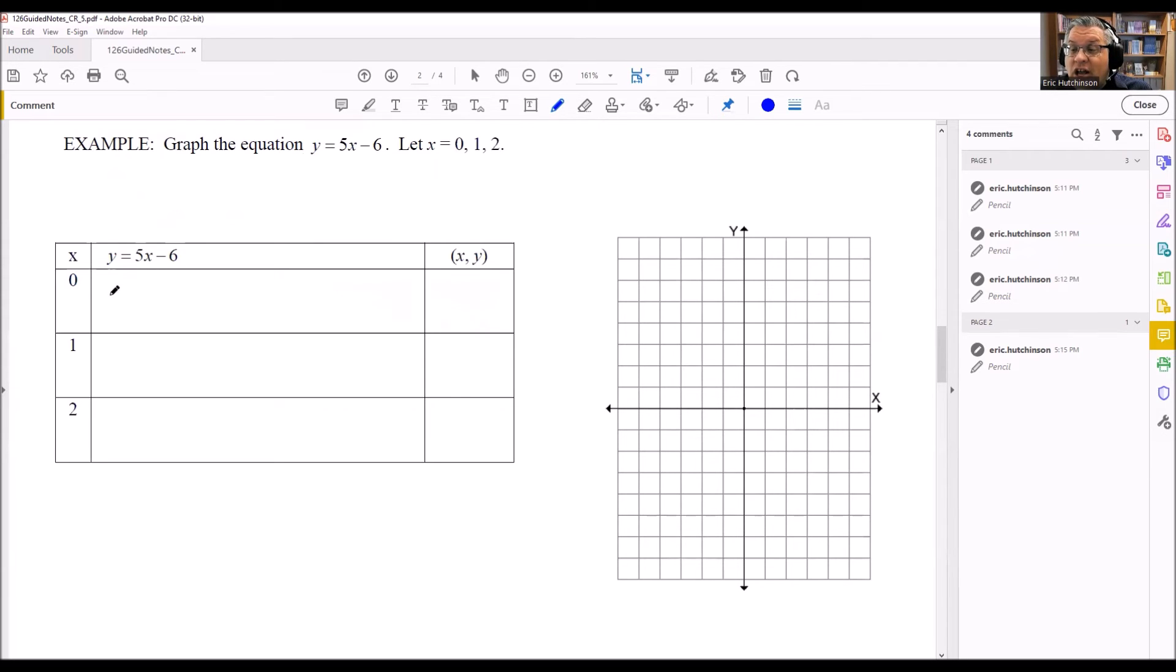So I'm going to put in a 0 for the x. I have 5 times 0 minus 6. 5 times 0 is 0, so I get 0 minus 6. That's going to give me y equals negative 6. The point is going to be 0 and negative 6. Next one is I put in a 1 for x. This is 5 minus 6, so y equals 5 minus 6. If I simplify that, I get negative 1. So 1, negative 1 is my next point.